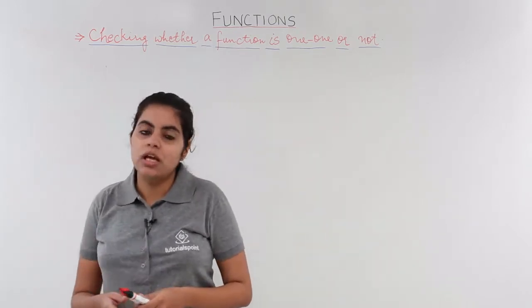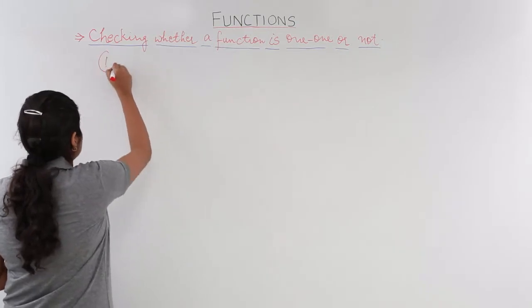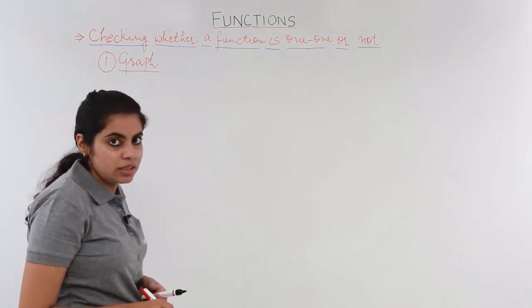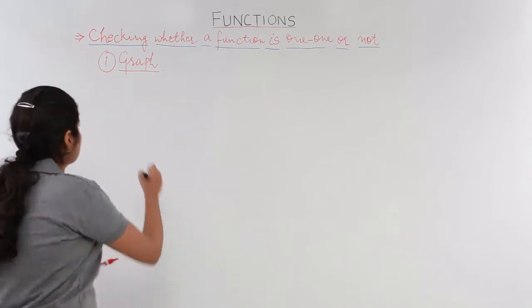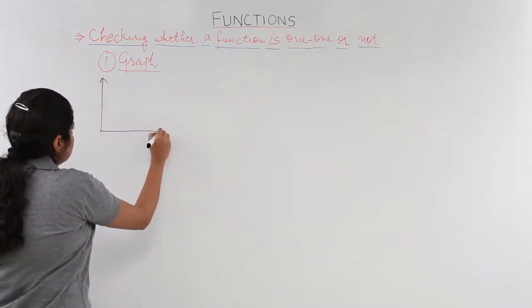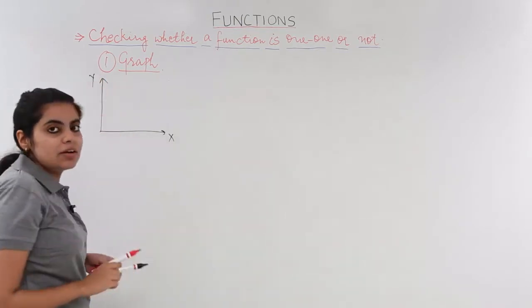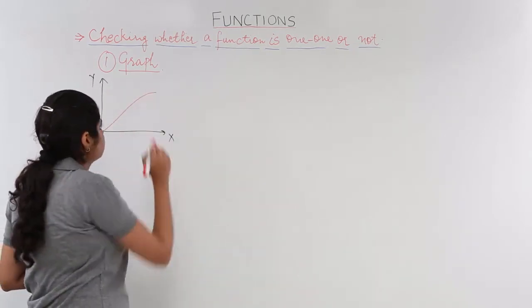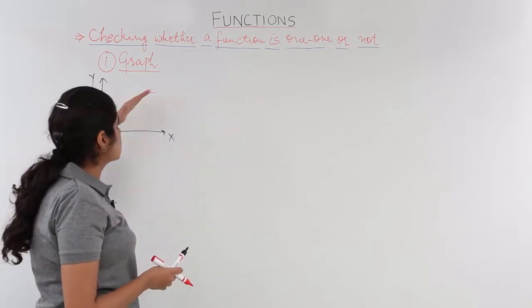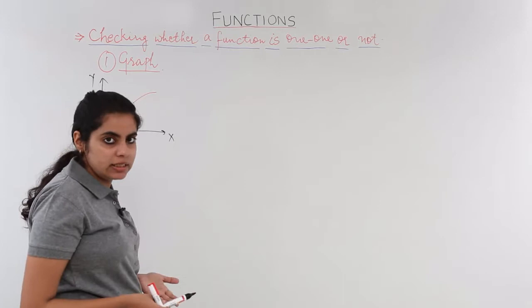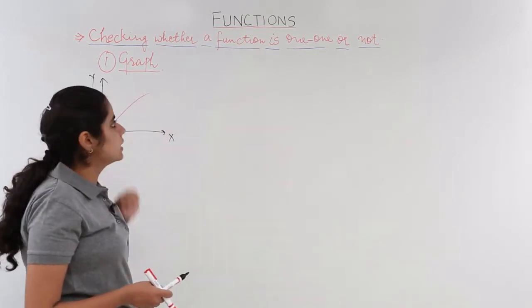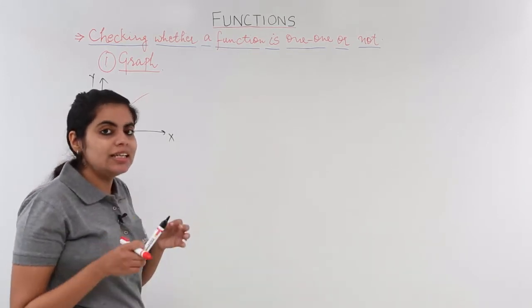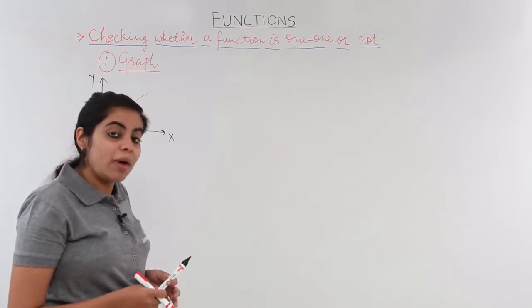The first category to check a one-one function is the graph. When a graph is given, how do we check whether a function is one-one or not? Let's say I have this graph given — this is the x-axis, this is the y-axis, and I have a graph on these axes. The graph may be either a straight line graph or a curvilinear graph. The technique is very simple: draw a line parallel to the x-axis.